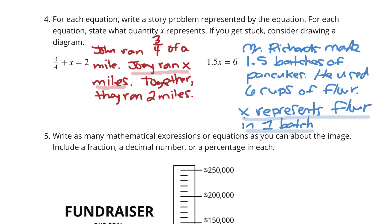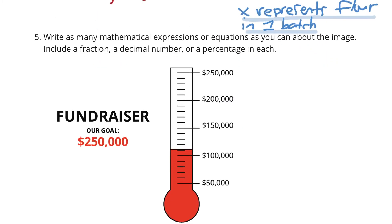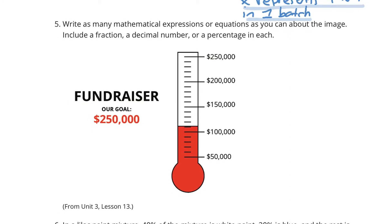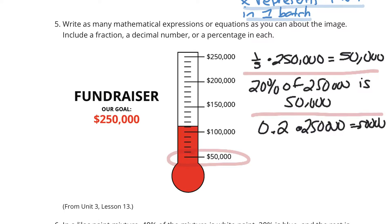And now, write as many mathematical expressions or equations as you can about the image. Include a fraction, a decimal number, or a percentage in each. We could say 1/5 of 250,000 equals 50,000. If you think about it, this is divided into fifths. So, 1/5, 2/5, 3/5, 4/5, and 5/5 is our 100%. And then I just built everything based on that.